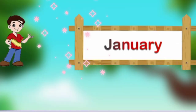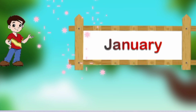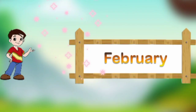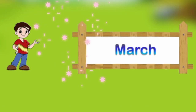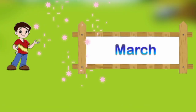January — spelling is J A N U A R Y — January. February — spelling is F E B R U A R Y — February. March — spelling is M A R C H — March.